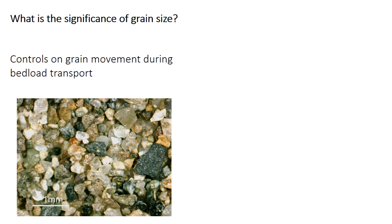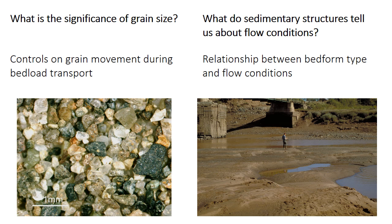Grain size is a fundamental piece of information, and we're going to use it again and again to infer ancient depositional conditions. We'll first discuss what controls grain movement, overall but especially during bed load transport. The next set of slides will introduce some bed forms produced by unidirectional water flow — these bed forms, or at least the sedimentary structures they leave in the rock record, are extremely useful for diagnosing ancient environmental conditions. In class you'll work on determining how grain size and water velocity affect the formation of different bed forms.